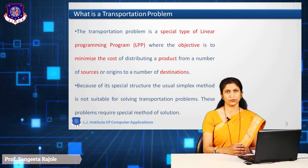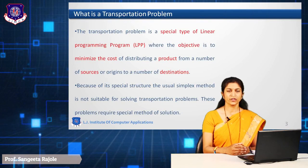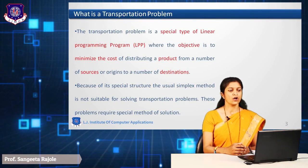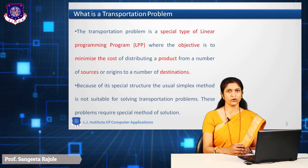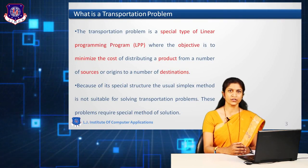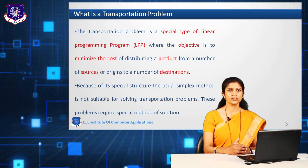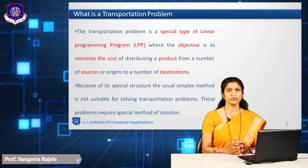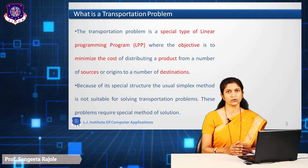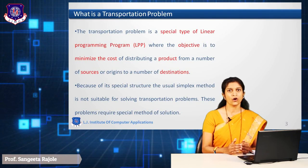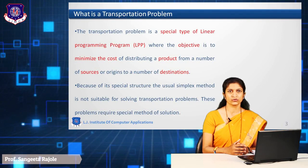What is the transportation problem? It is a special case of linear programming problem where the objective is to minimize the cost of distributing a product from n number of sources or origins to n number of destination points. Basically, the transportation problem is used to transfer goods from one source to another destination, minimizing and optimizing the total cost.